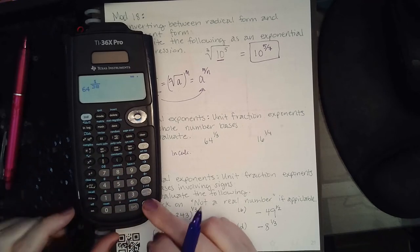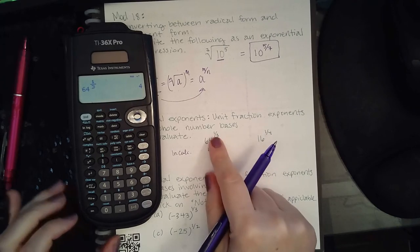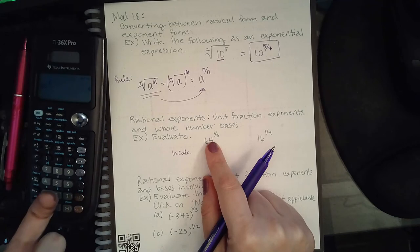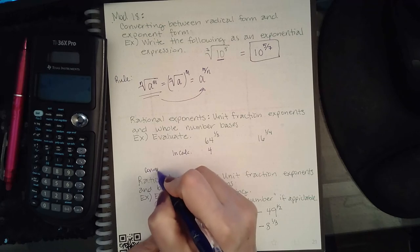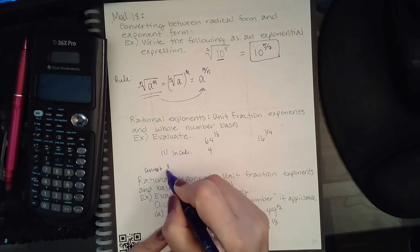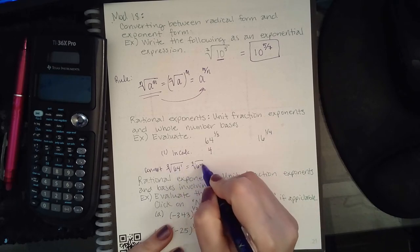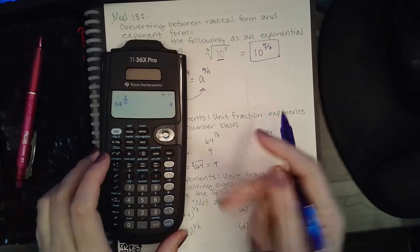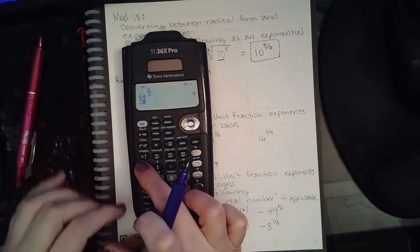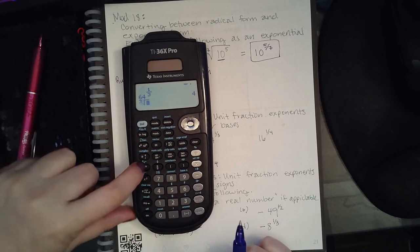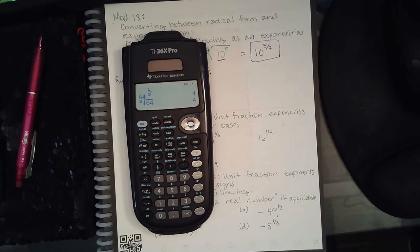It will tell me the answer is 4. However, you could also convert it to radical form and type that in the calculator. In radical form, this would be the cube root of 64, which is 4 because 4 times 4 times 4 is 64. If I type in 3, then second square root (the square root with a little box), it'll put the 3 in that box, then I type 64—it still tells me 4.